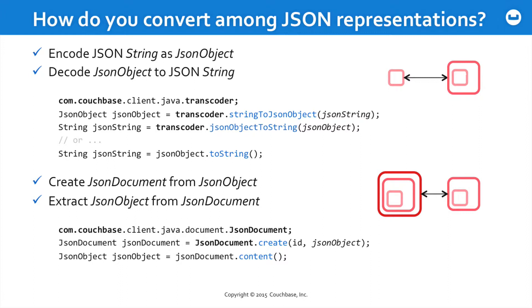Stringing this all together, if you wanted to get back to the raw string, you would call the toString method on the JSON object. As you explore the API in the docs, you'll see variations on all of the above.